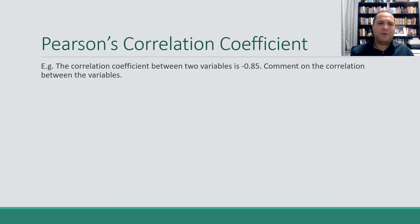All right, so looking at an example here, the correlation coefficient between two variables is negative 0.85. Comment on the correlation between these variables. Okay, so a few things. First of all, the negative sign at the very front here tells us that we've got a negative correlation.